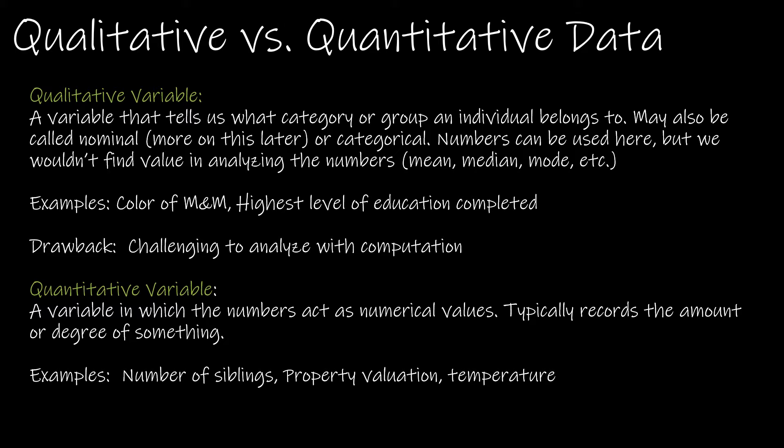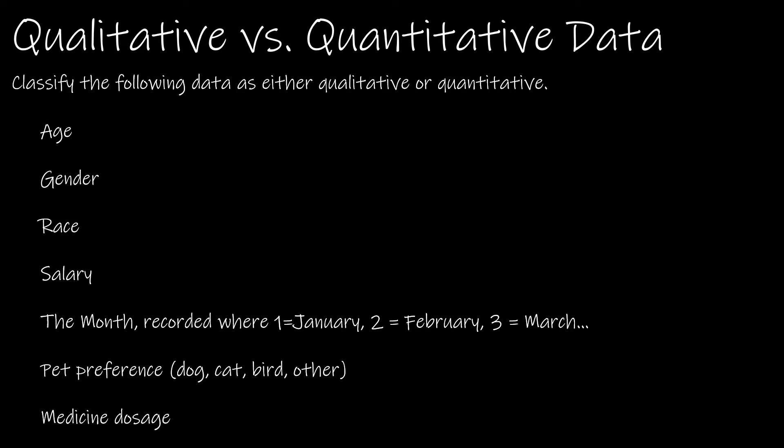The drawback to qualitative variables is that it's challenging to analyze, because we don't have meaningful numbers. Quantitative variables are numbers that act as numbers — typically you're going to record the amount of something or the degree of something. For instance, your height, your weight, or the number of siblings you have are all numbers I would find value in averaging.